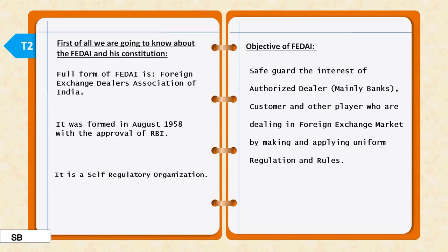First of all, we are going to know about FEDI and its constitution. The full form of FEDI is Foreign Exchange Dealer Association of India. It was formed in August 1958 with the approval of RBI. FEDI is a self-regulatory organization. FEDI's main objective is to develop uniform rules in the foreign exchange market and apply them.